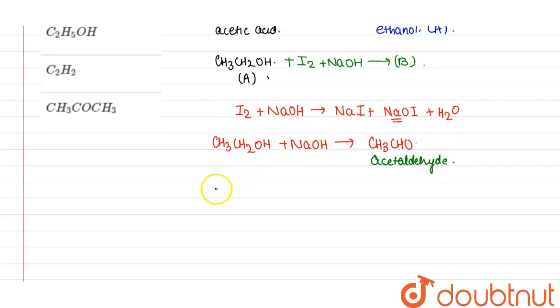Now this acetaldehyde molecule will undergo haloform reaction in presence of 3 iodine and 4 NaOH to give CHI3, that is iodoform, along with HCOONa, and 3 NaI along with 3 H2O.